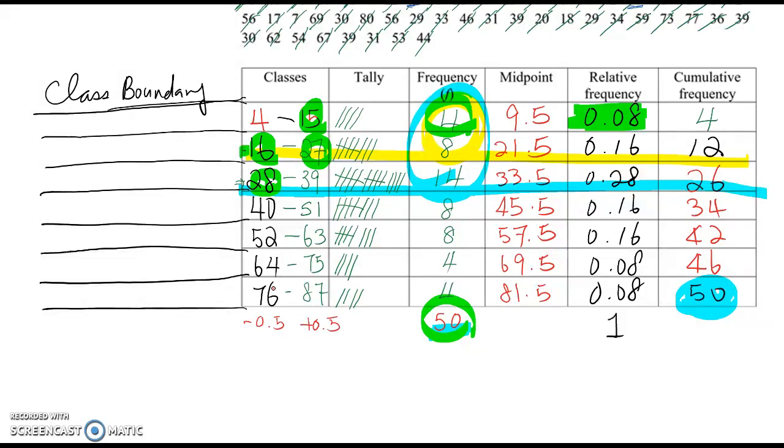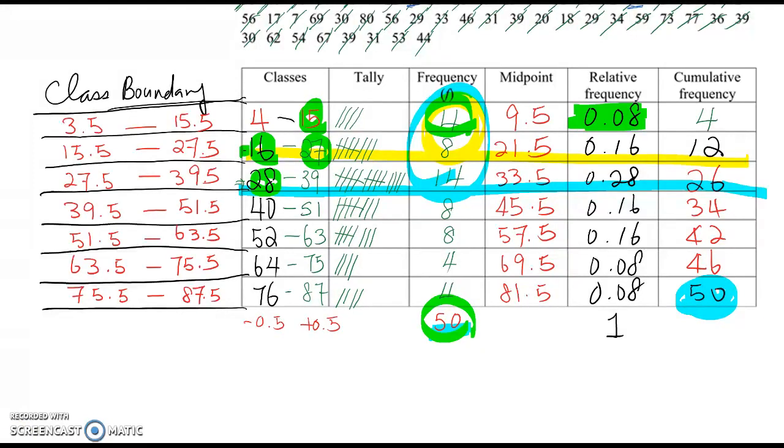So if I complete this class boundary, you will get those values. So first class boundary will be 3.5 to 15.5 as we discussed. So I calculate using this way. So if you have those class boundary value, then you have a correct value.